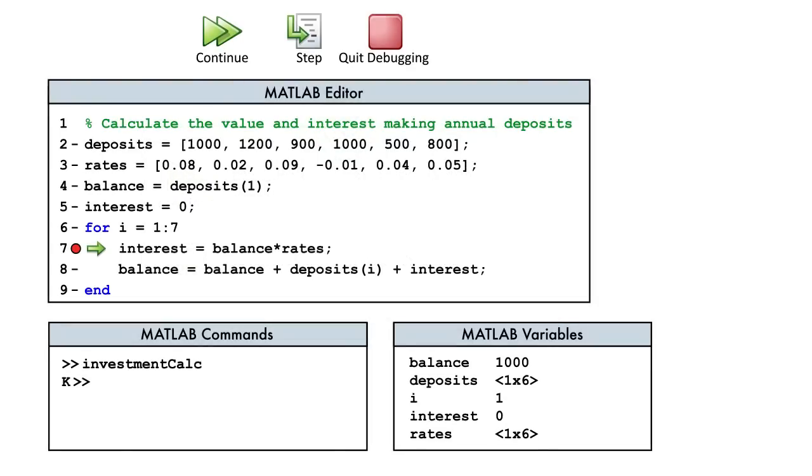Since we don't know where the error is, let's use the Step button to execute line 7 and advance the code one line. The variable Interest is updated, and we see it is a vector of 6 elements. Looks like we might have found our error, since interest is supposed to be a scalar value.